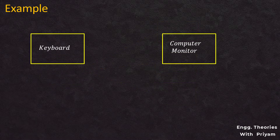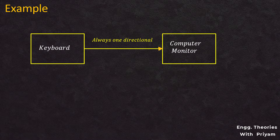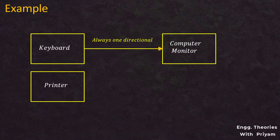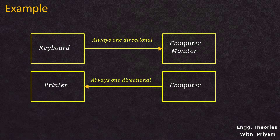Another example of simplex transmission is the relationship between a keyboard and monitor, or between a computer and printer. The keyboard can give inputs to the monitor, which receives and displays them, but the monitor can never reply or send feedback to the keyboard — transmission is always one-directional from keyboard to monitor. Similarly, data transmission in the case of a printer is also one-directional, from computer to printer. Simplex channels are also commonly used in fiber optics communication.